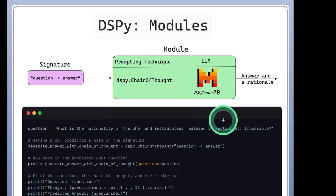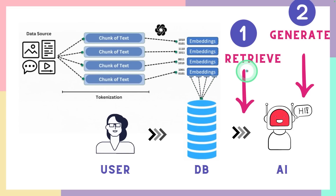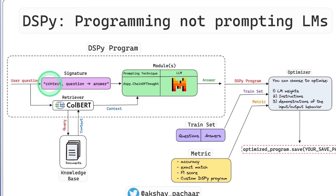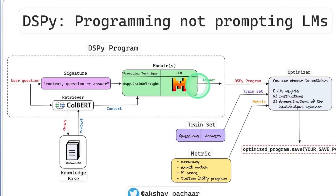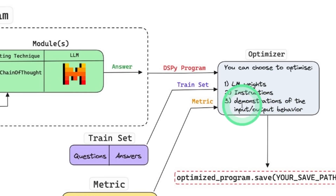Modules involve two things: the prompting technique and the large language model. The third component is the optimizer. In DSPY, there is an automatic system which can automatically evaluate the generated response and the retrieved context against the ground truth, then modify the prompts and the weights to get much more accurate answers. The user asks a question, then based on that, we provide context and the question to the large language model to get an answer. The signature predefines how the whole system looks. This can then be fed into the optimizer to optimize the LM weight instructions or demonstrations of the input and output behavior.